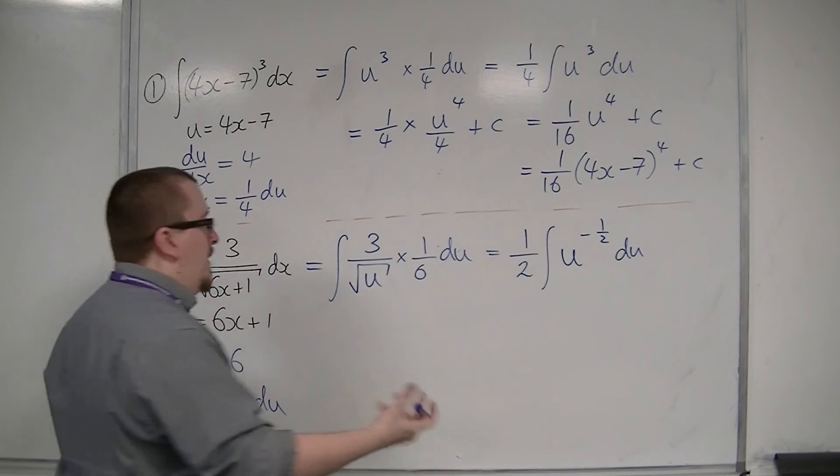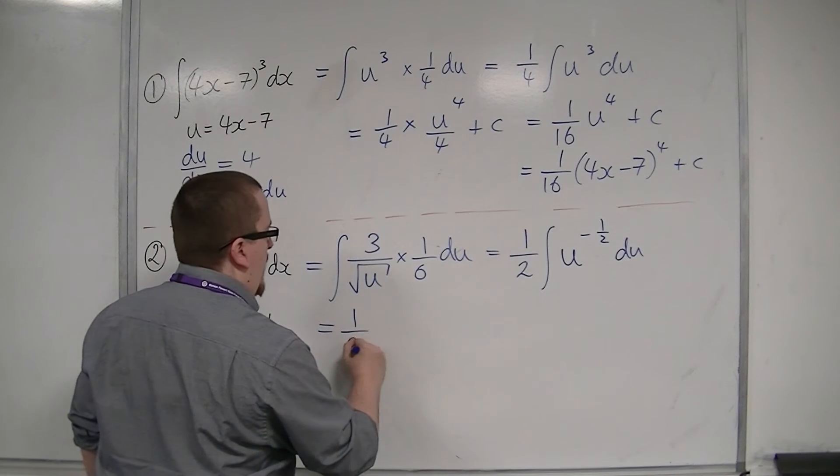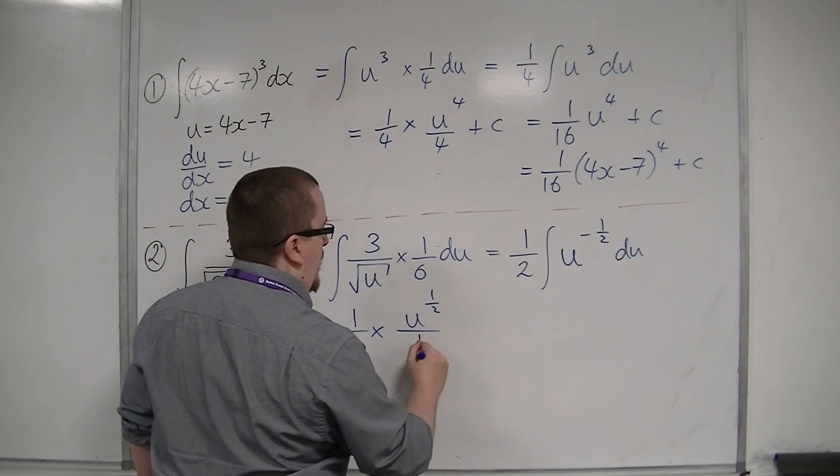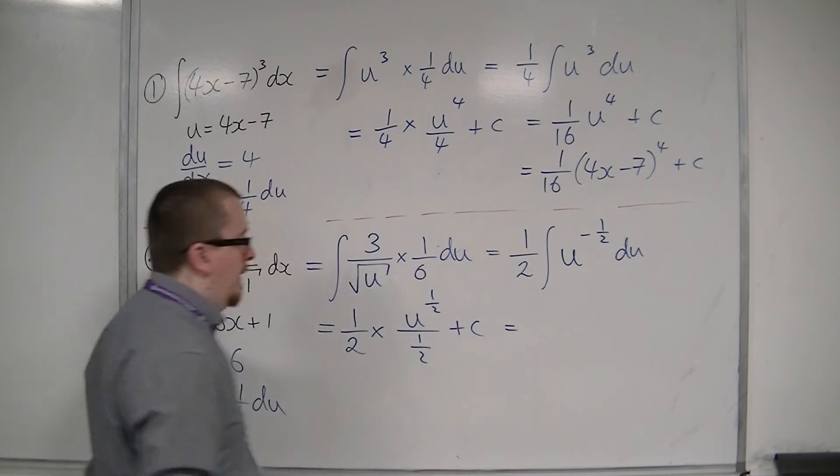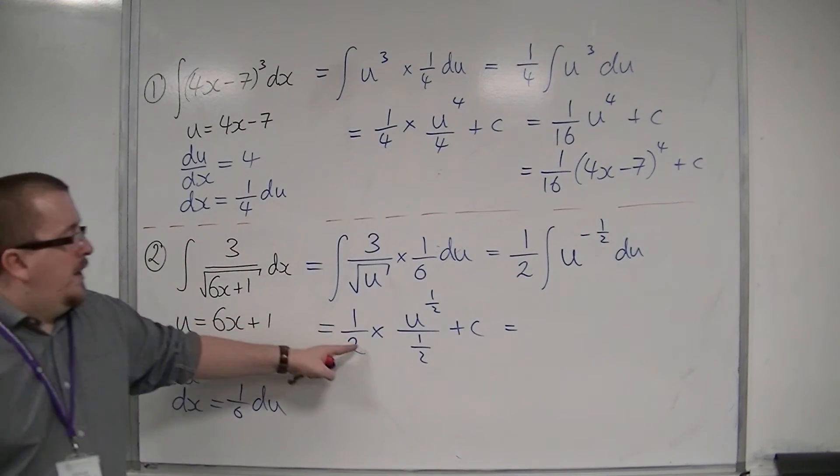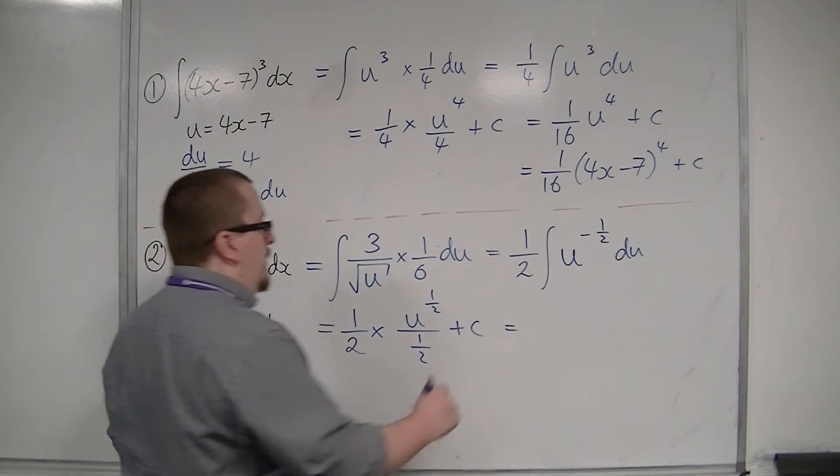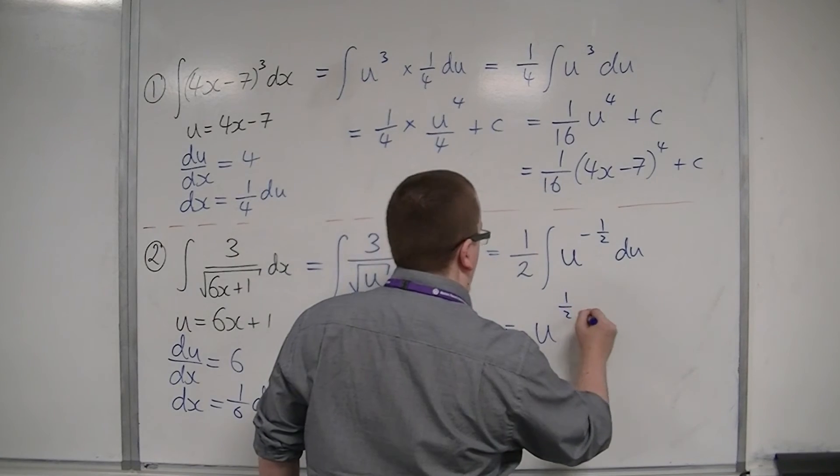So then, I add 1 to the power, divided by the new power. So I'm going to have u to the half, divided by 1 half, plus c. Now if I've got a half, multiplied by a half and divided by a half, then they cancel each other out. So this is u to the half, plus c.